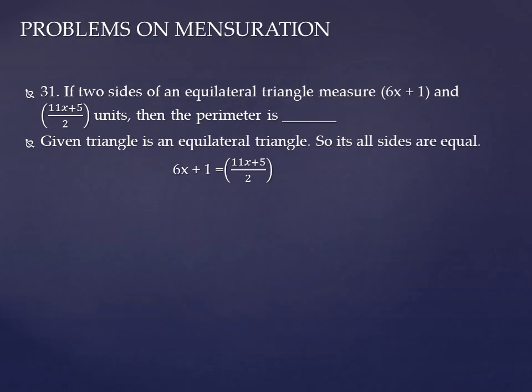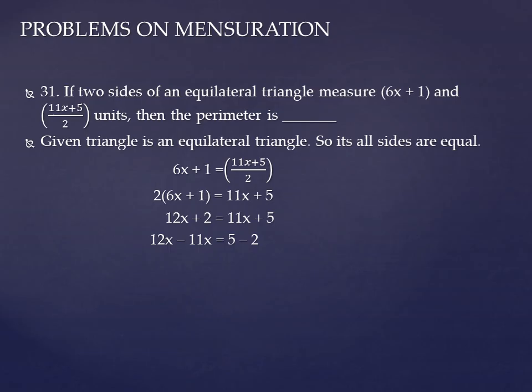Transposing the 'by 2' to this side, we get 2 of (6x plus 1) is equal to 11x plus 5. Applying the distributive property, we get 12x plus 2 is equal to 11x plus 5. Bringing like terms together: 12x minus 11x is equal to 5 minus 2. Simplifying, we get x equal to 3.